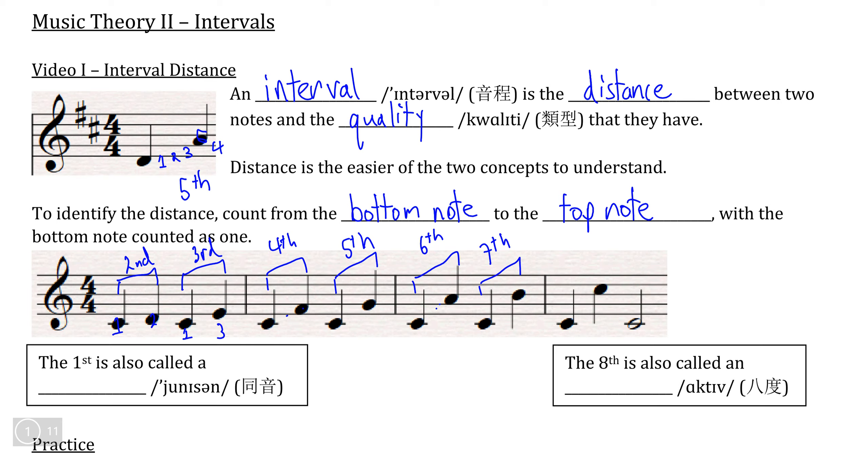Once we get back to C, if we count C, D, E, F, G, A, B, C, you should have counted a total of eight times. So this is why the distance between C and the higher C is what we call an eighth. And if we remember that the prefix for eight is oct, that's why the distance between any note and the higher version of that same note is what we call an octave because the two notes are an interval of an eighth apart.